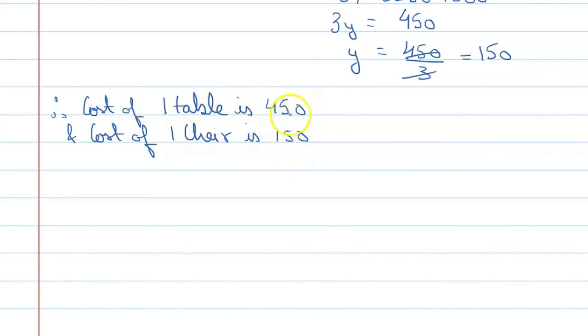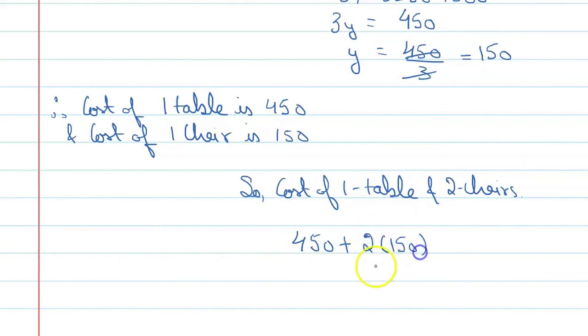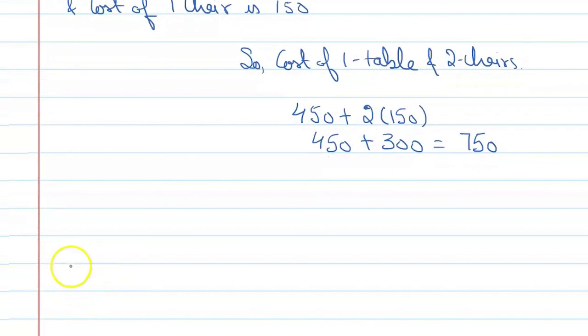Now let's find the cost of one table and two chairs. Cost of one table is 450, and the cost of two chairs is 2 into 150, which is 300. So the answer is 450 plus 300 equals 750. Therefore, 750 is the answer, and the correct option is B.